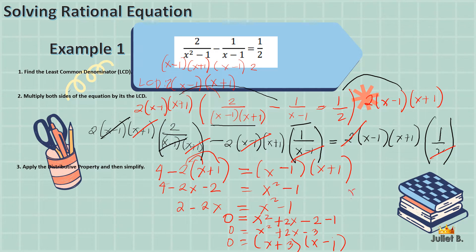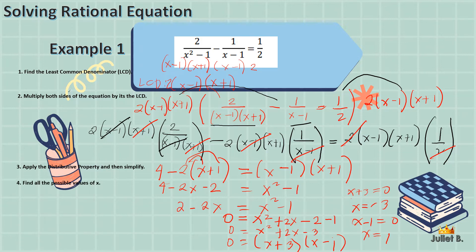Equating both factors to 0: x plus 3 equals 0, so x equals negative 3; and x minus 1 equals 0, so x equals 1. We have two possible values of x: negative 3 and positive 1. The last step is to check each value by substituting into the original equation and rejecting any extraneous roots.